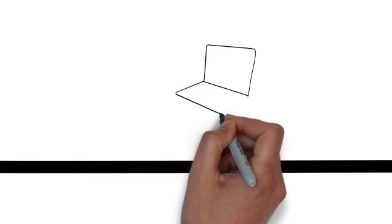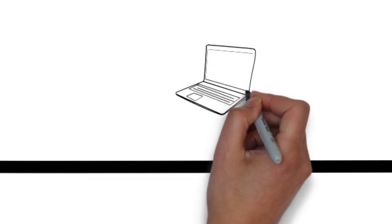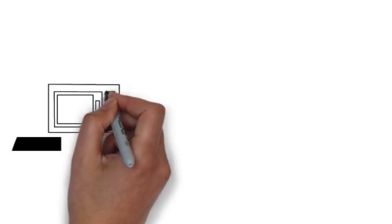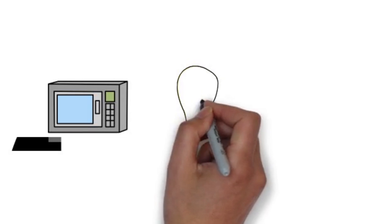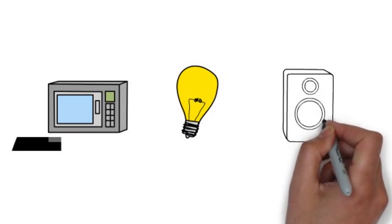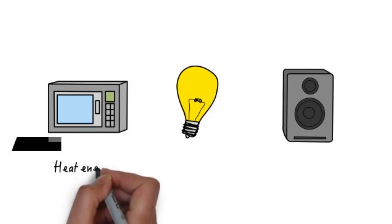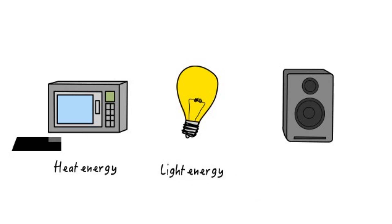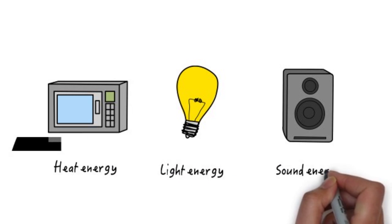The movement of electrons along a path creates an electrical current. We use electric currents to power many appliances in our lives. Most modern devices are capable of using electrical energy and converting it into other forms of useful energy, such as heat energy, light energy, and sound energy.